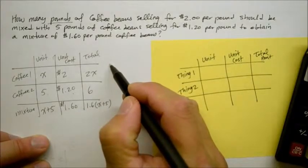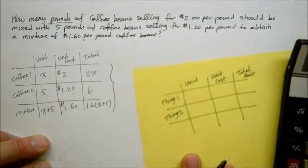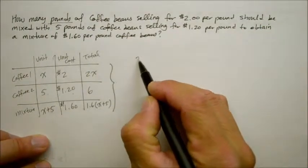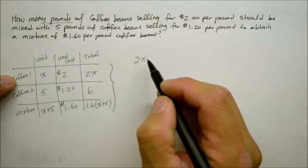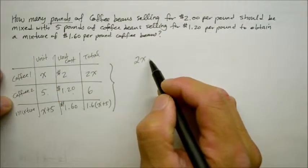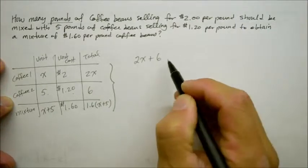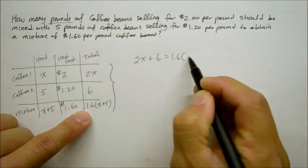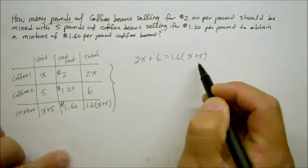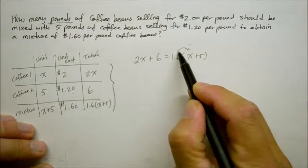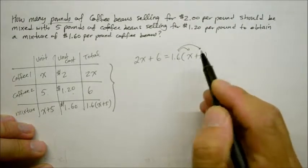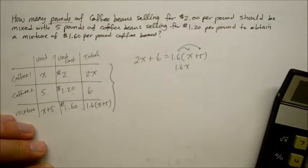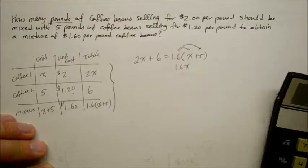And like I said before, we're going to take all the information from the right side of the column, and then we're going to make it into an equation. Because 2X, the expensive coffee, plus the homegrown coffee should equal the mixture of it all, which is 1.6 times the quantity of X plus 5. And to do that, we do the distributive property. 1.6X times 5. 1.6 times 5, that gives me 8.